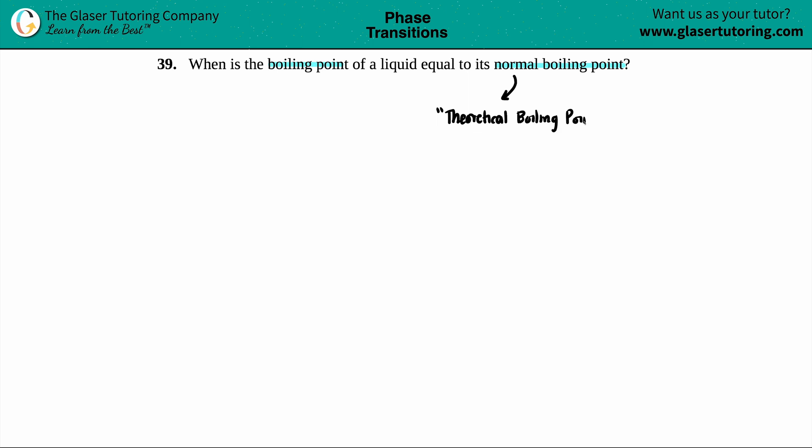Now, there's only one way in which a boiling point for a substance equals that theoretical or that normal boiling point. And that is if you're under standard conditions, because it's all about theory. So we're dealing with standard conditions here.